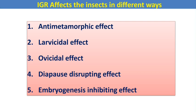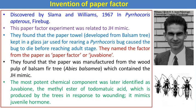The roles of IGRs include anti-metamorphosis effect, larvicidal effect, ovicidal effect, oviposition-disrupting effect, and embryogenesis-inhibiting effect. Larvicidal means it attacks the larval stage, ovicidal means it is effective against eggs, and it also affects embryogenesis occurring inside the eggs. A key discovery related to IGRs was made by Slyman Williams in 1967, known as the paper factor, which is directly related to insect growth regulation.